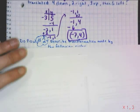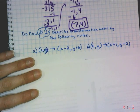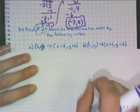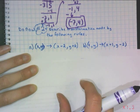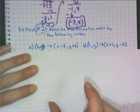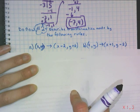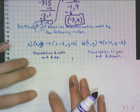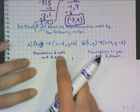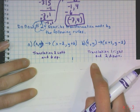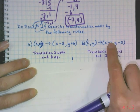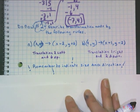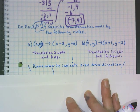The final do now for translations: describe the transformation made by the following rules. Be as descriptive as possible — state the type of transformation, the direction, and how far. Rule 1 is a translation 2 left and 6 up. Rule 2 is a translation 1 right and 2 down. Remember to always indicate both the size and direction.